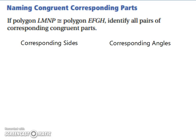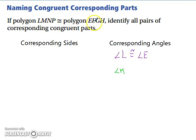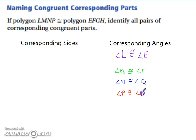Let's name congruent corresponding parts. If polygon LMNP is congruent to polygon EFGH, identify all pairs of corresponding congruent parts. Notice where L and E are in the same place — they are the corresponding angles. So angle L is congruent to angle E. Angle M is in the same position as angle F, so they are congruent. Angle N is in the same place as angle G, so angle N is congruent to angle G. And likewise, angle P is congruent to angle H. These are congruent to each other because the polygons are congruent.